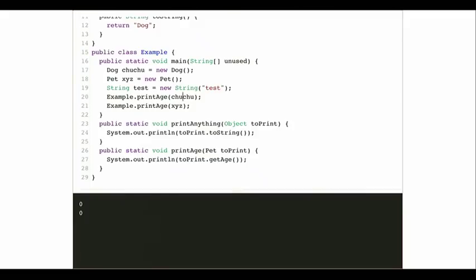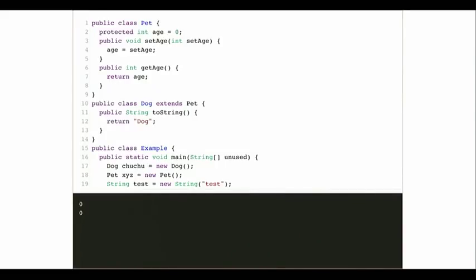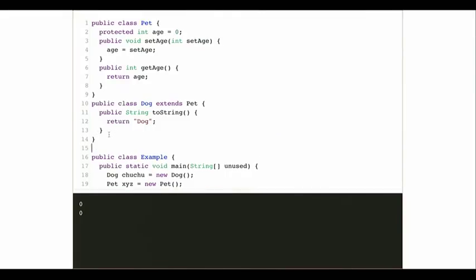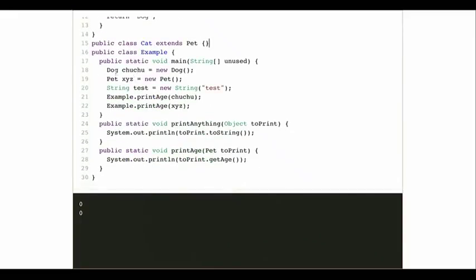The question was: can I call getAge on a dog? Yes, because dog extends pet, so dog inherits everything that pet has. I defined age on pet, so anything that extends pet now has this getAge method. For example, if I created a new cat class, I don't even have to do anything special — creating a new cat and calling getAge still works. Anything that extends pet inherits this method and the field too, because I marked it as protected.